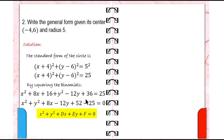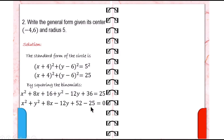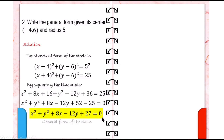We have negative 12y. Then the constants: we have 36 and 16. Combining them gives 52. Then we transpose the constant 25 to the other side and simplify: 52 minus 25 is 27. And this is now the general form of the circle.